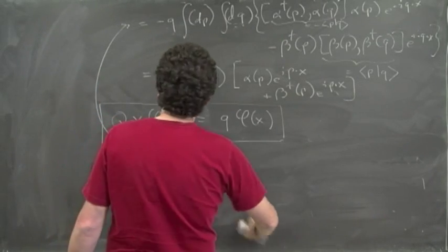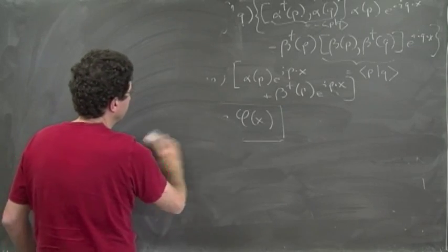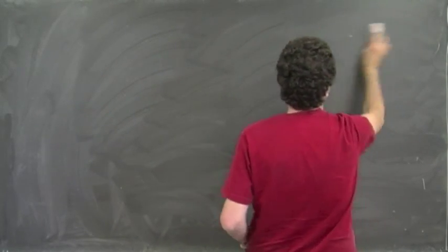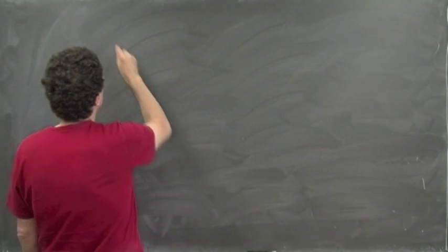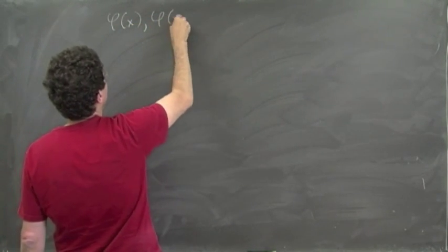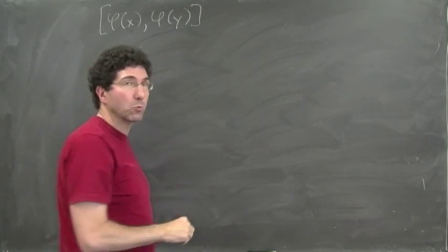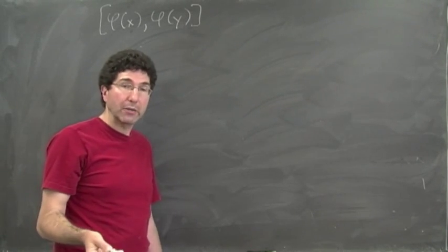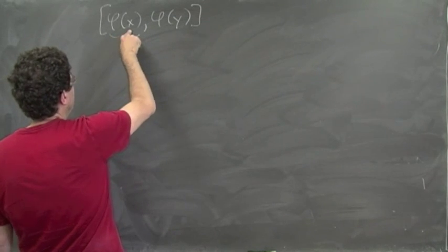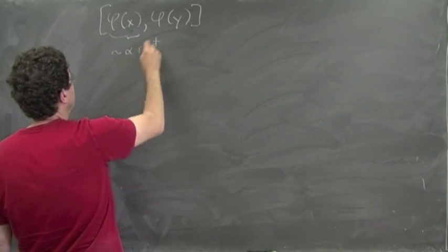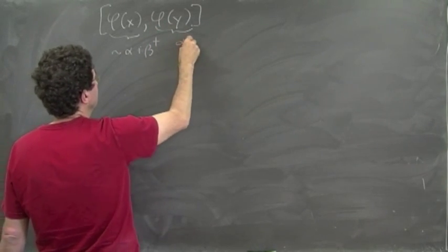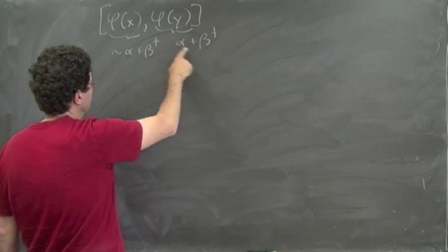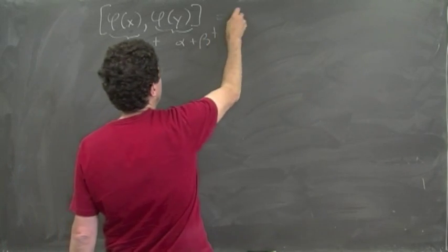Now let's check that this field φ commutes with itself at spacelike separation. For [φ(x), φ(y)], since φ is a linear combination of α and β†, and everything commutes with everything here, we get zero with no calculation necessary.